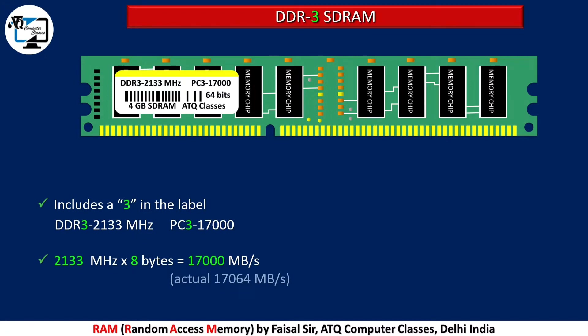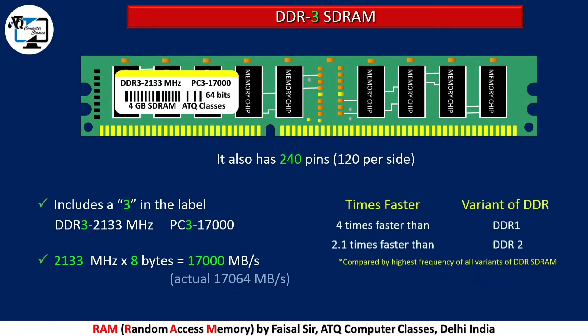DDR3 also has 240 pins, with 120 pins per side. It is 4 times faster than DDR1 and 2.1 times faster than DDR2.